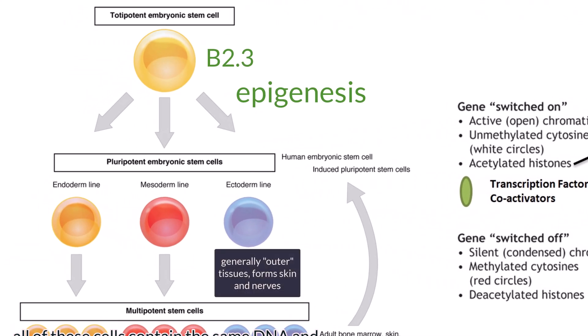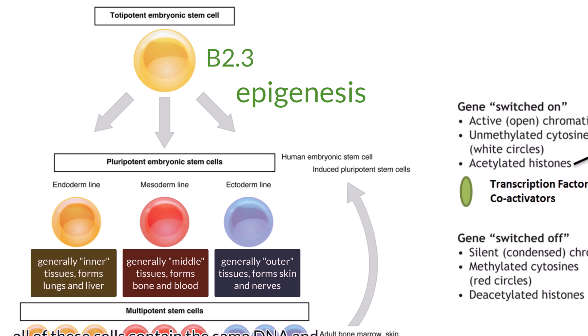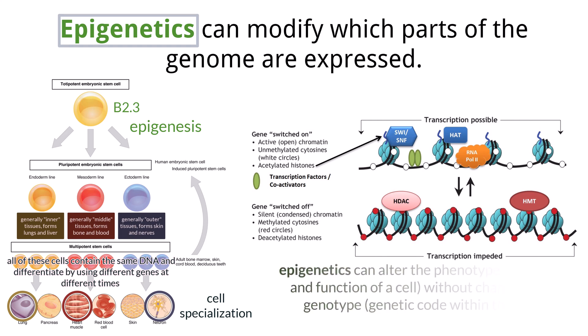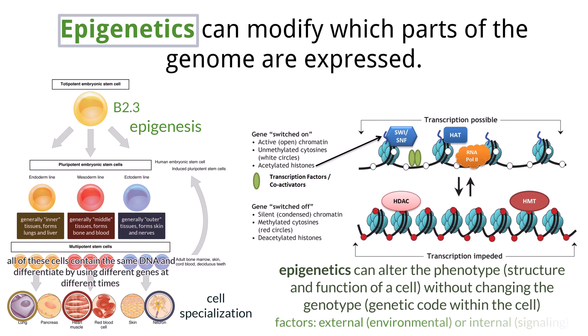A human embryo has three layers of cells: the ectoderm, which will form tissue such as the brain and skin; the mesoderm, which forms tissue such as skeleton and circulatory systems; and the endoderm, which forms tissue such as lungs and liver. There are non-genetic factors that influence the expression of genes, and that is called epigenetics. The process of epigenetics changes the phenotype but does not change the genotype. These epigenetic factors can originate from outside the organism — environmental stressors — or from within the organism, such as signals from molecules in the body.